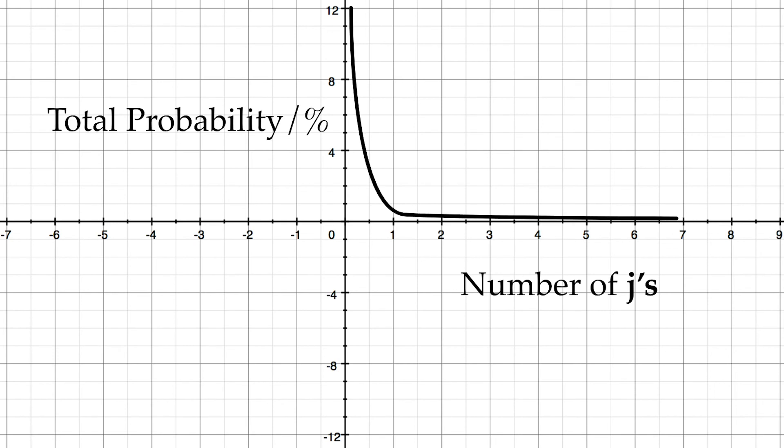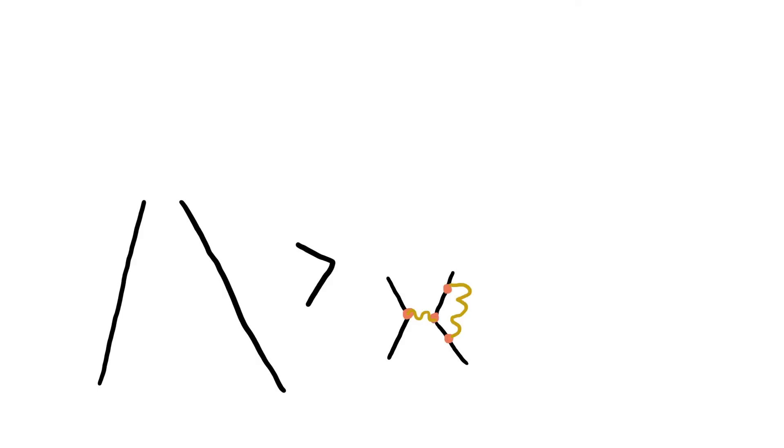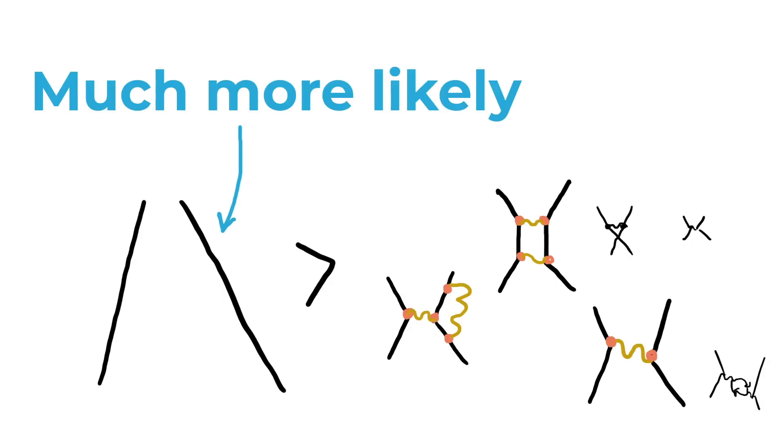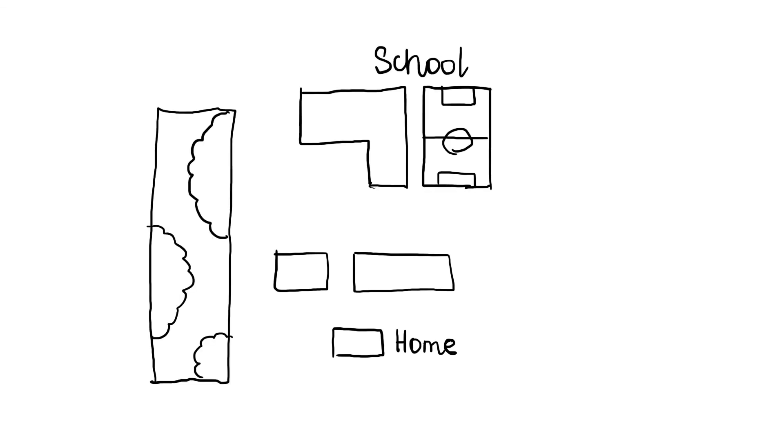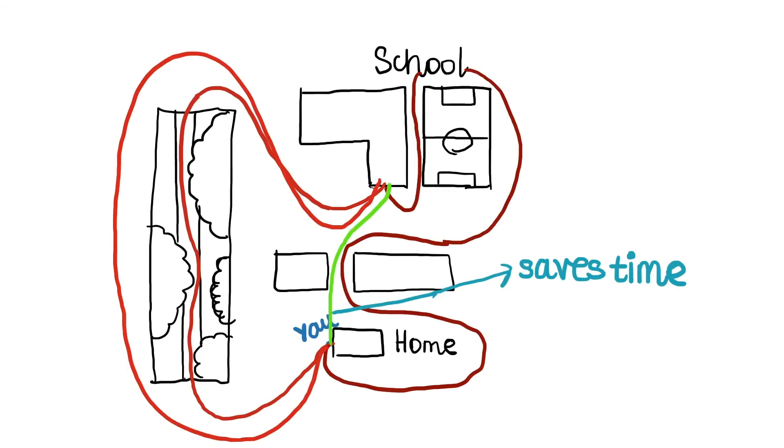The more Js there are, the less that diagram contributes to the total probability. That's why the simplest routes are more likely than the complex ones. It's similar to how you can take many routes to school, but you are more likely to take the shortest one there to save time.